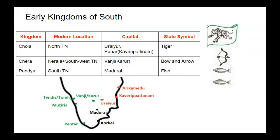Another important port city was Marakkanam, above Arikamedu. The important city of the Pandya Kingdom was Madurai, their capital, and the port city of Korkai. The important city of the Chera Kingdom was Vanji or Karur, their capital, and three important port cities were Pantar, Mujris and Tondi.